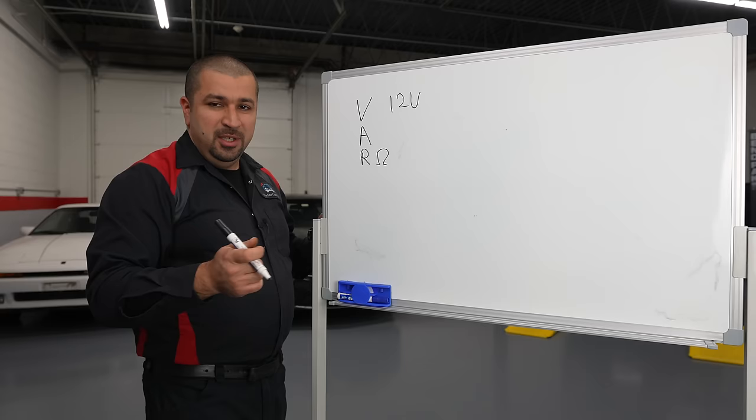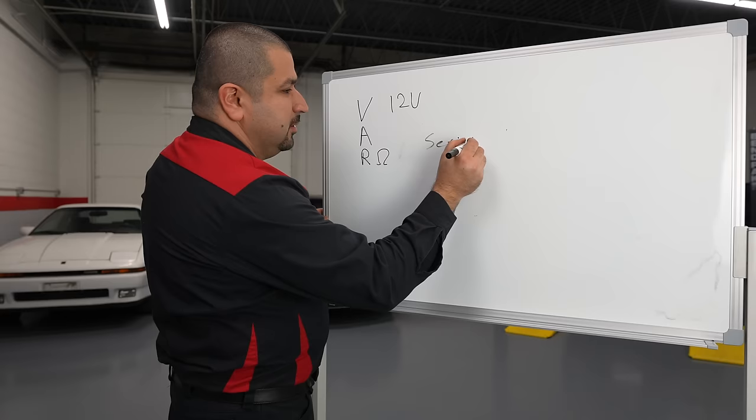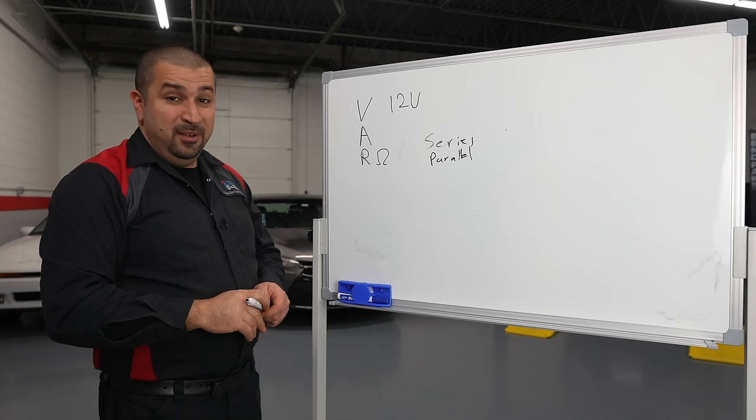We have two types of circuits. We have series and parallel circuits. These are the two main circuits you're going to find in cars and let's take an example of each.